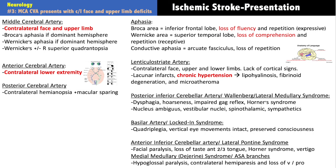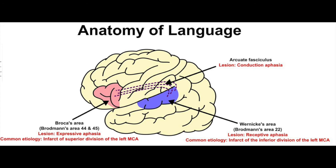Broca's is expressive aphasia — the patient can't express what they want to say. Wernicke's is receptive aphasia — the patient talks but can't receive or comprehend information. The arcuate fasciculus connects Broca's and Wernicke's areas; a lesion there causes conduction aphasia — loss of repetition with otherwise intact fluency and comprehension. A proximal MCA stroke can cause global aphasia, knocking out all areas and losing fluency, comprehension, and repetition simultaneously.